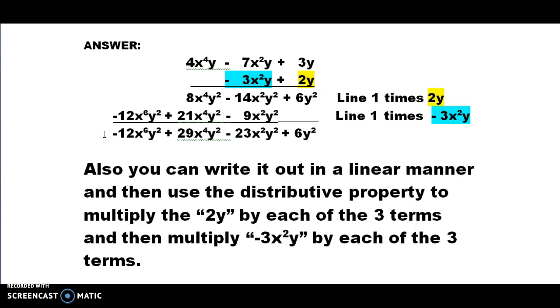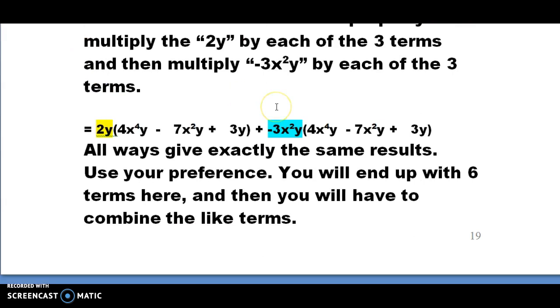So that's the long multiplication way. A lot of you may have learned another way in high school of writing out these problems in a linear manner, where you use the distributive property. You would multiply 2y by each of the three terms, and then you would multiply minus 3x squared y by each of the three terms. So it would look like this if you did that.